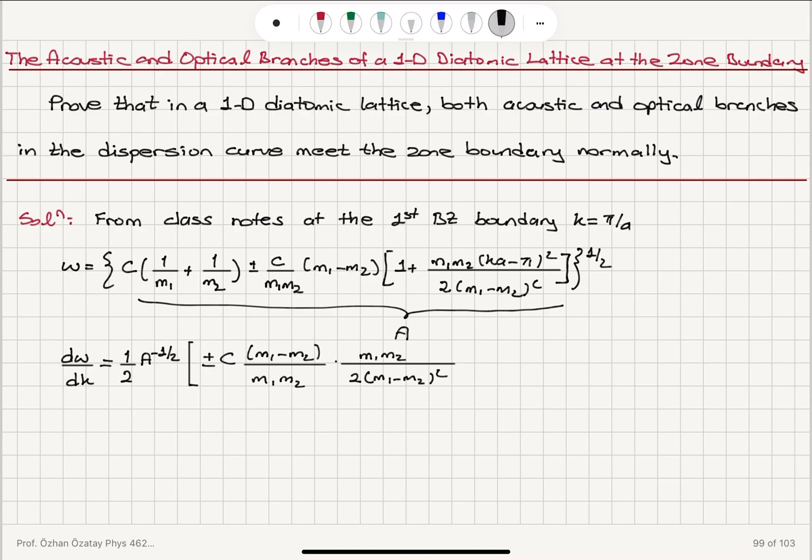And the derivative of (ka - π)² with respect to k is 2(ka - π)·a, and this will be evaluated at the Brillouin zone boundary k = π/a.